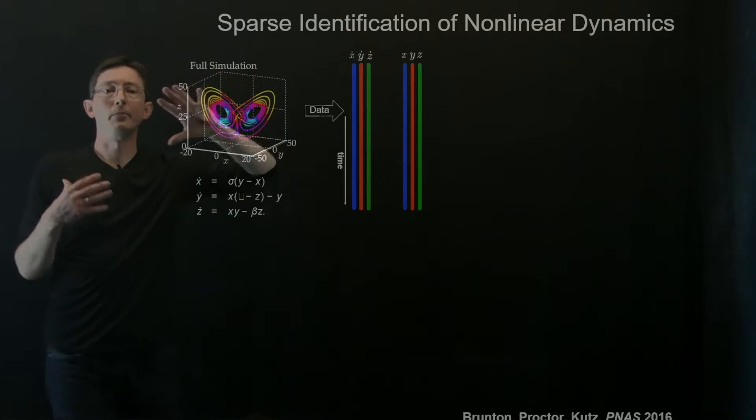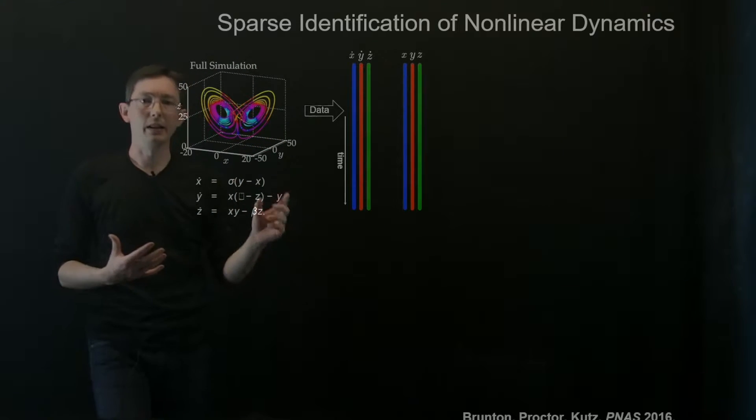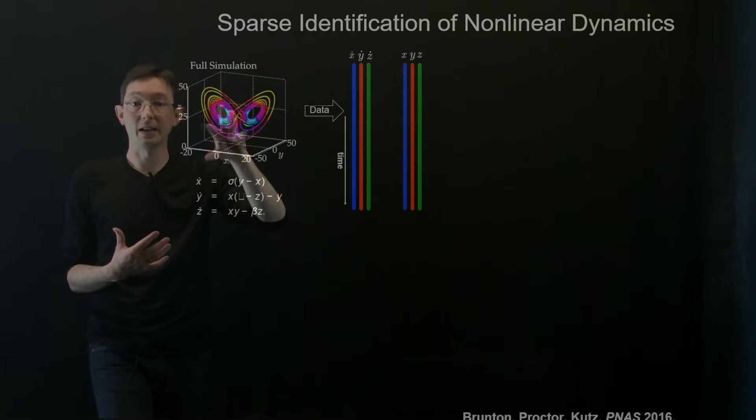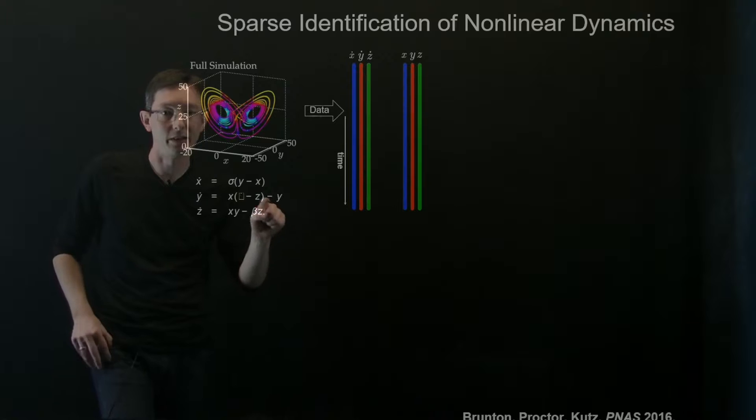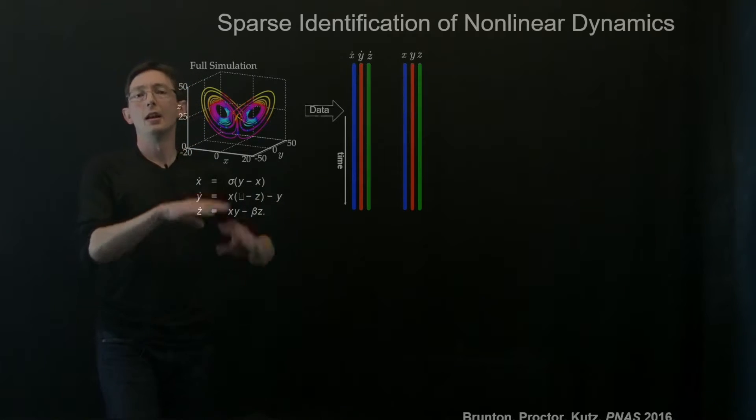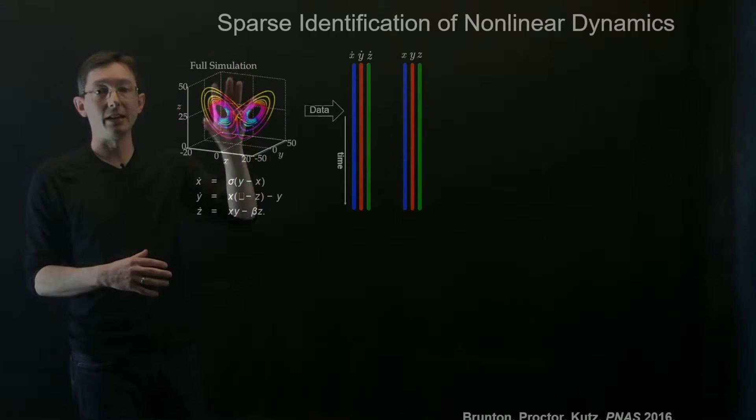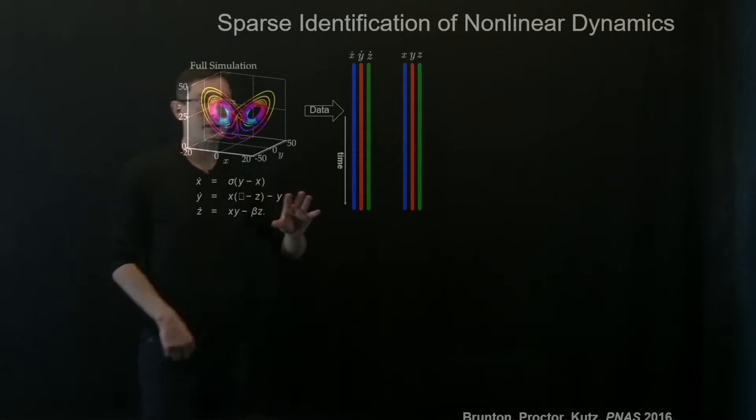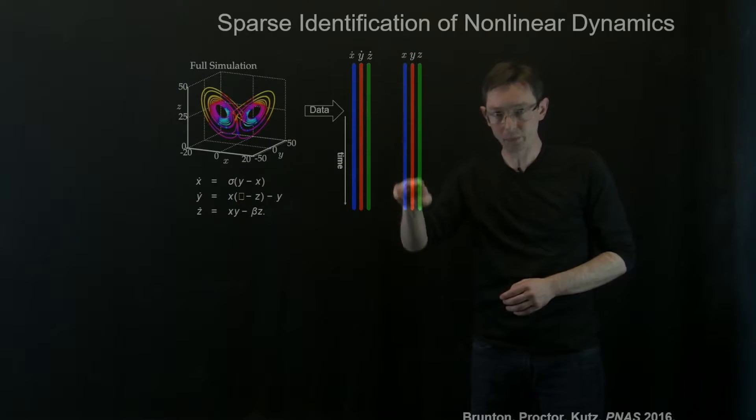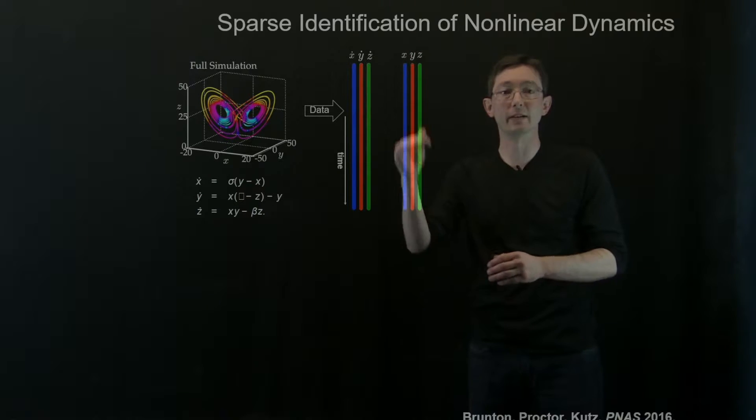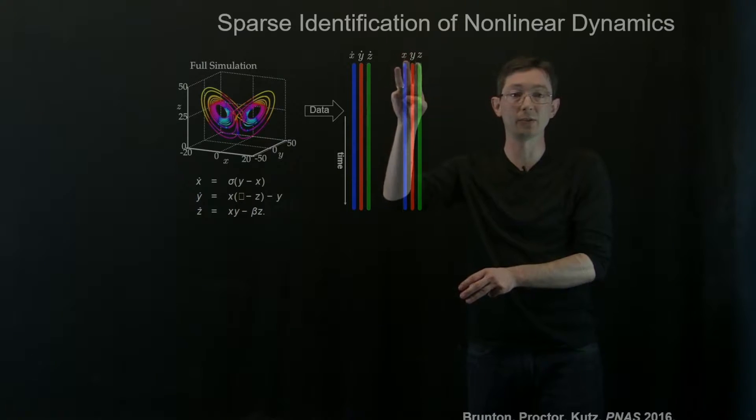The basic idea here is if I have some measurement data of my system, let's say this is the Lorenz system, if I have some measurement data of some nonlinear dynamical system, what I can do is I can form this data into these tall columns that evolve in time. So my three state variables x, y, and z in time, and x dot, y dot, and z dot.